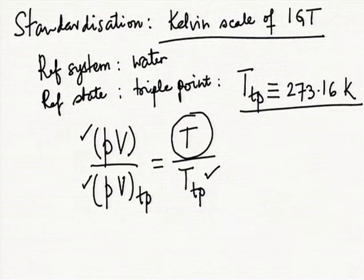Why 273.16 K? Whenever we do something new, we must know how it relates to something old — the Celsius scale was the standard scale in the old CGS system. We wanted the relation to be as simple as possible so that conversion is easy. So we compared the Kelvin scale with the Celsius scale.